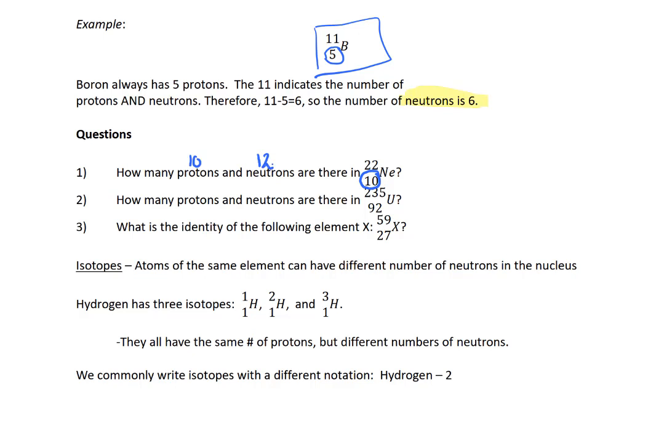So for uranium-235, we know that uranium has an atomic number of 92 because that's on the periodic table and it's also listed here. In order to figure out the number of neutrons, you take 235, subtract 92, and you get 143.